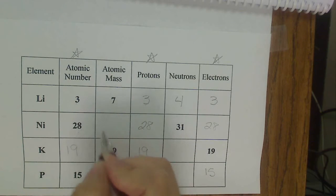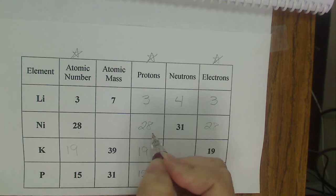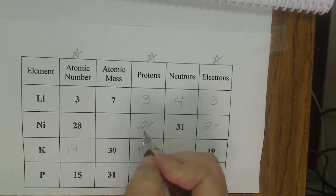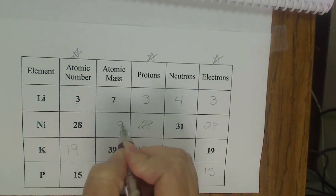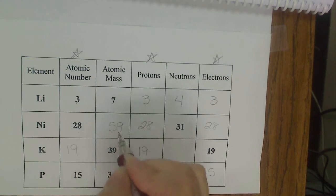Here, I don't have my atomic mass, but I do have my number of neutrons and my number of protons. So I'm going to add 28 plus 31. So 8 plus 1 is 9, and 3 plus 2 is 5. My atomic mass is 59.